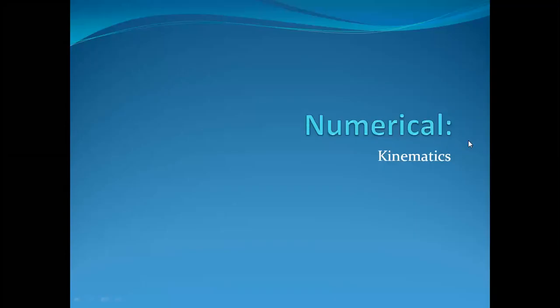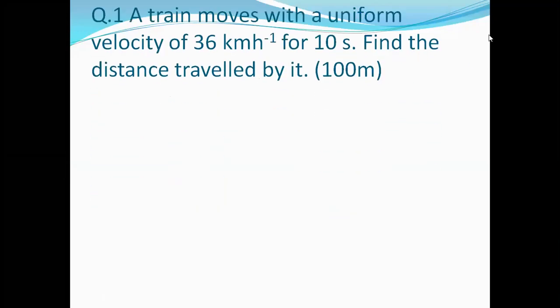Today's topic is going to be about numericals of chapter kinematics. The first numerical we are going to do: a train moves with a uniform velocity of 36 km per hour for 10 seconds. Find the distance traveled by it.